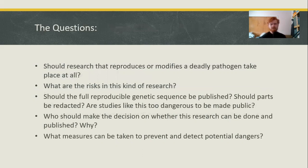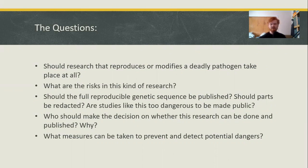Here are our questions. Should research that reproduces or modifies a deadly pathogen take place at all? What are the risks in this kind of research? Should the full reproducible genetic sequence be published, or should parts be redacted — as in, do you publish everything except a key step so it can't actually be made by anybody else? Are there studies that are too dangerous to be made public, and if so, what would that study be? Who should make the decision on whether this research can be done and published, and why? Finally, what measures can be taken to prevent and detect potential dangers, and those measures will have to be taken by whoever you choose as your answer for who should decide.